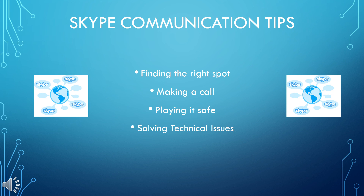For voice calls, choose a quiet spot without a lot of background noise. If you're at home or work, watch out for things like the TV, other people talking, or construction noise outside. If you're in public, avoid busy places like a coffee shop unless you have a headset with a microphone. For video calls, also choose a quiet, relatively private spot — a room in your house or a place at the office would be ideal. Make sure it's well lit so the other person can see you, and be cautious of what else might be caught on camera.